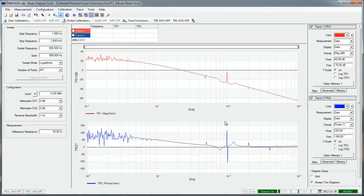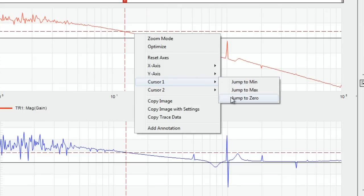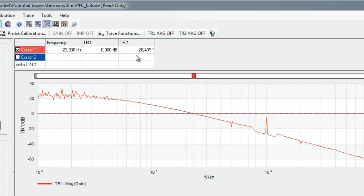We can now determine the gain margin and the phase margin by using the cursor. We set cursor 1 to the 0 dB line and get a phase margin of 28 degrees.